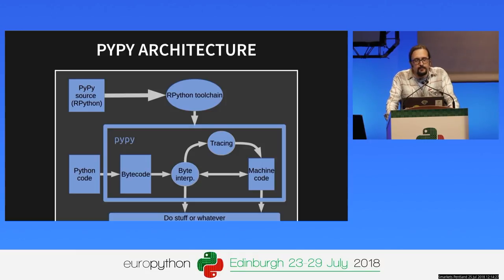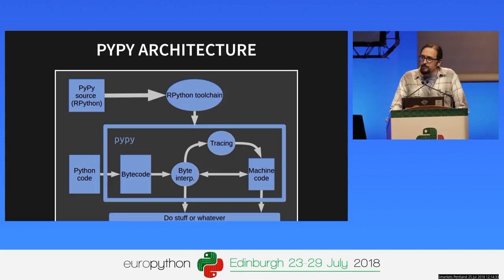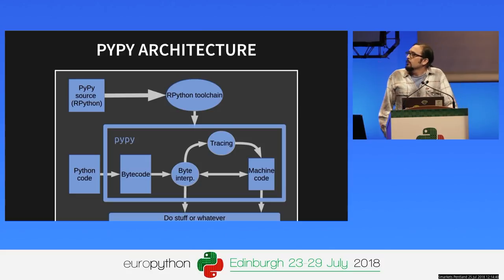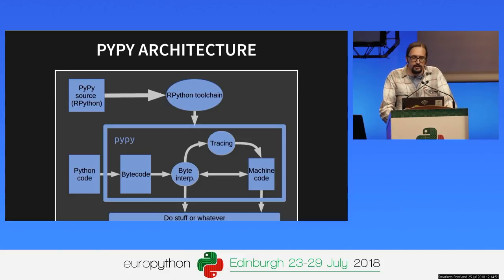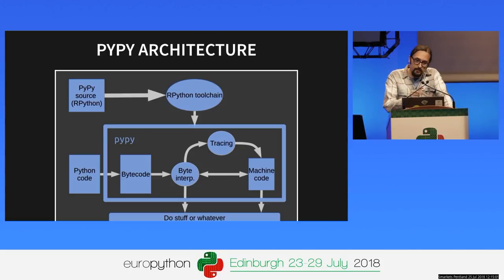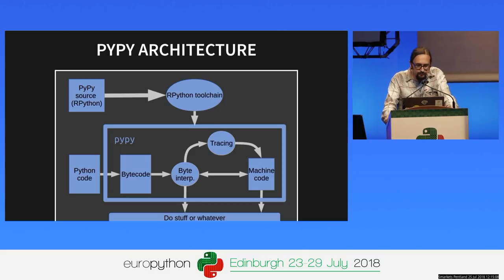The magic in PyPy comes mostly from the Python toolchain, which generates more or less automatically the JIT compiler, and also adds other features that work with the JIT, like the GC. The other good thing about this toolchain is that the language we use is RPython, which is a subset of Python, so we can easily test the interpreter.